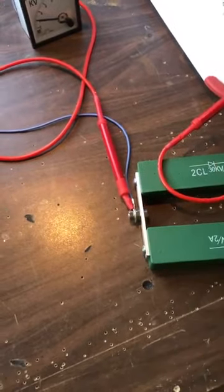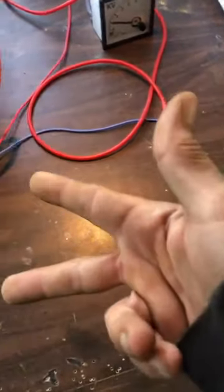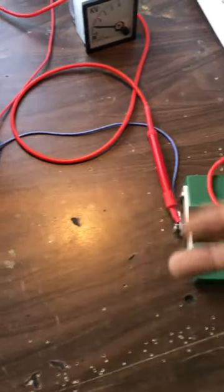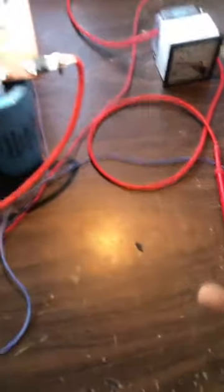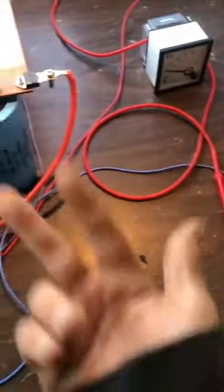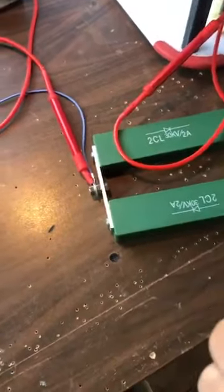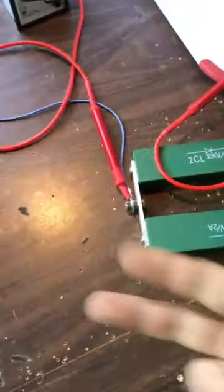And then you would rectify the varistor, because that'll clamp at AC at, say, 600 volts, whatever you want. And then it would go into the diodes, and it wouldn't have to be these high voltage diodes after the varistor, because it would already be clamped.